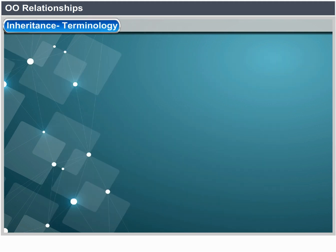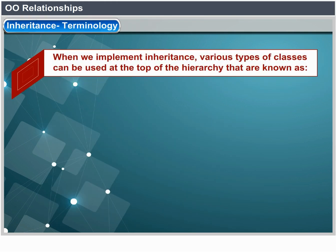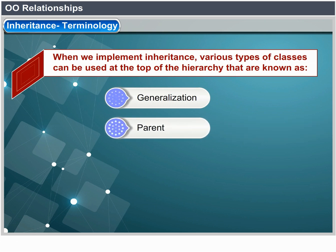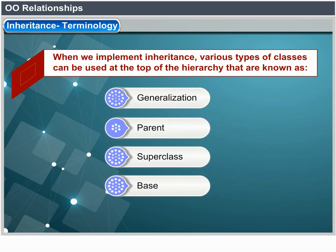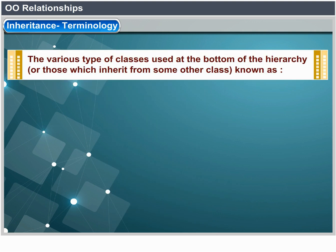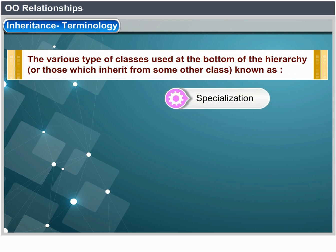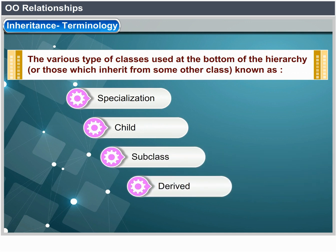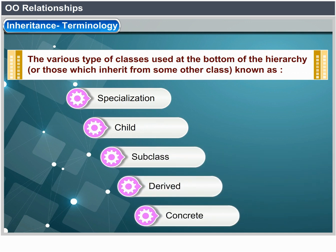Inheritance terminology: classes at the top of the hierarchy are known variously as generalization, parent, superclass, base, or abstract. Classes at the bottom that inherit from another class are known as specialization, child, subclass, derived, or concrete.